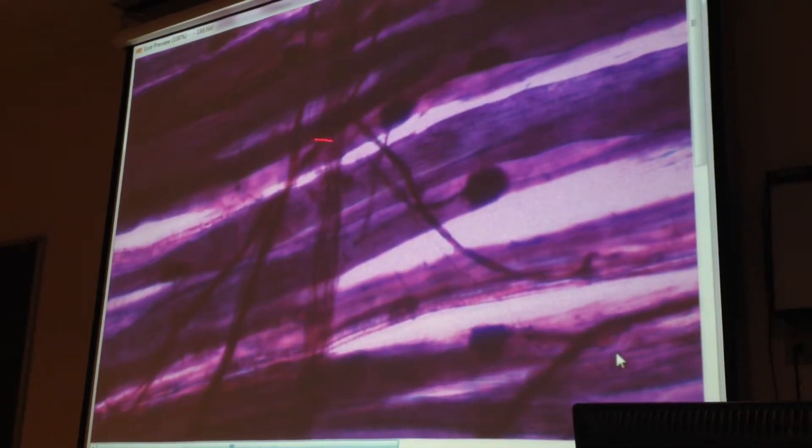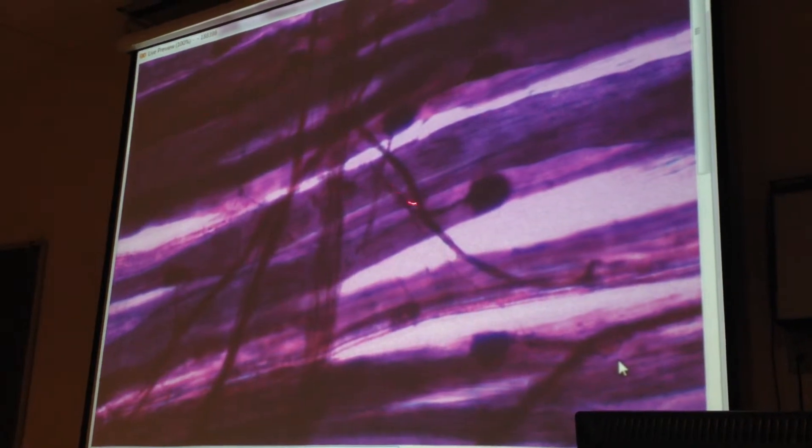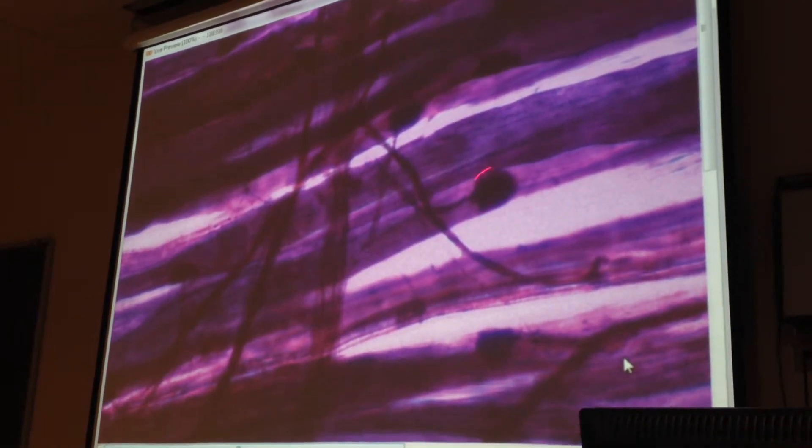So it's not a dendrite. Telodendria is the outgoing branch, so here's a telodendria, it ends in a terminal bouton.